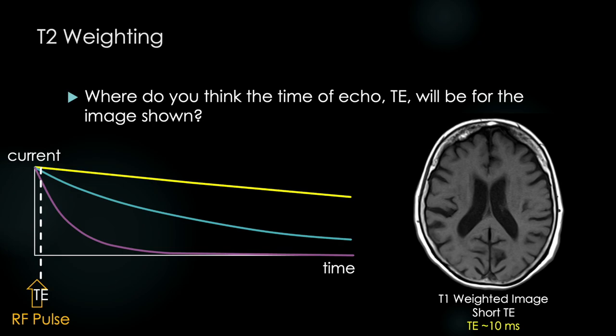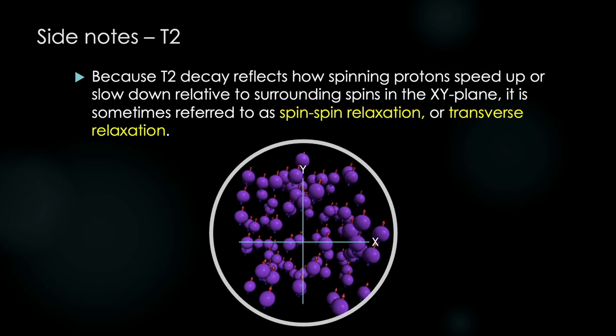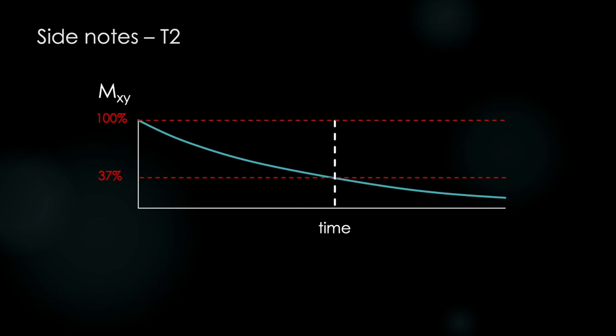But rest assured, we haven't left out some critical new concept. It really does play into what we've been talking about all along, and the answer is hidden within this figure in front of us. So for now let's tie up some loose ends with T2-weighting. I want to clarify some confusing terminology you might come across, especially on gotcha exams, that claim to be the pathway to success in life. Because T2 decay reflects how spinning protons speed up or slow down relative to surrounding spins on the XY plane, it's sometimes referred to as spin-spin relaxation or transverse relaxation.